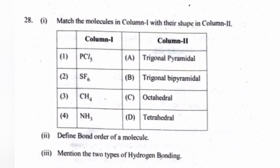Match the molecules in column 1 with their shape in column 2. (1) PCl5 — trigonal bipyramidal. (2) SF6 — octahedral. (3) CH4 — tetrahedral. (4) NH3 — trigonal pyramidal.